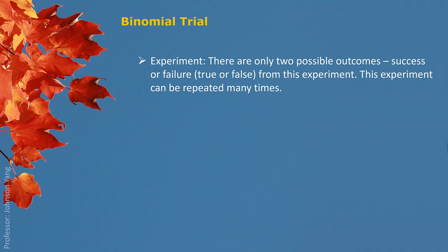In this experiment, there are only two possible outcomes: success or failure. This experiment can be repeated many times. We say it is very common because any experiment may have many possible outcomes, but we can always organize all the possible outcomes into two groups. One group is what we are interested in, and another includes everything else. What we are interested in is called success, and the rest is called failure.